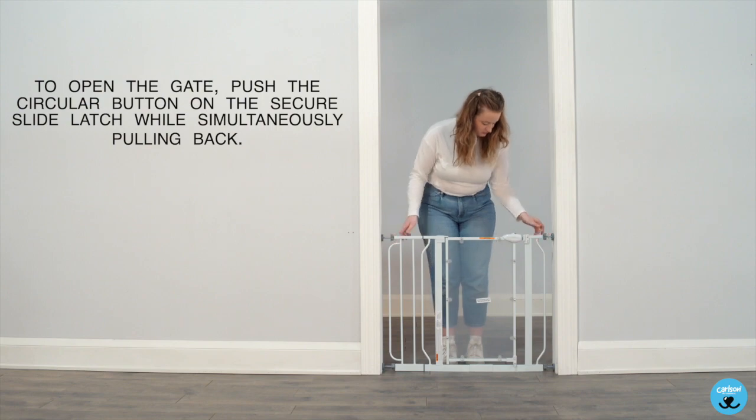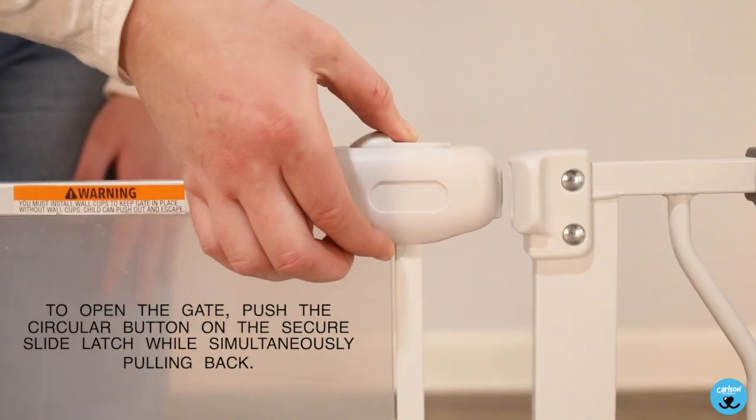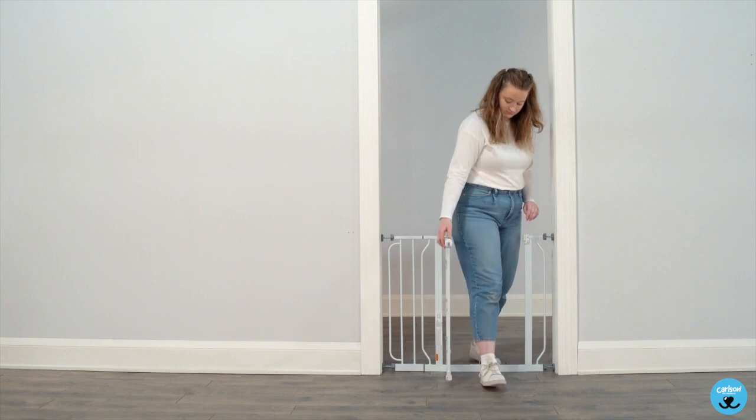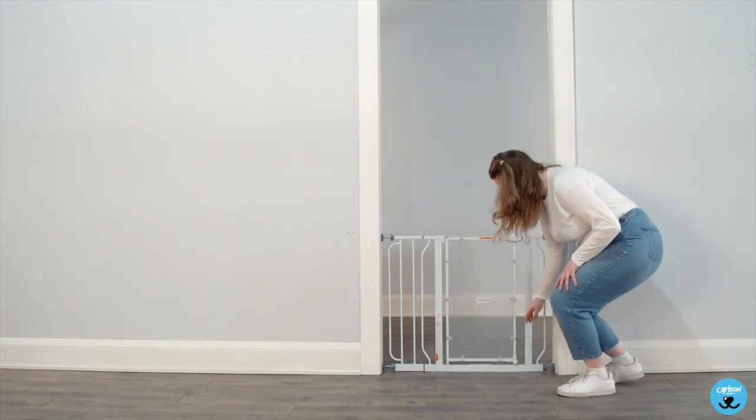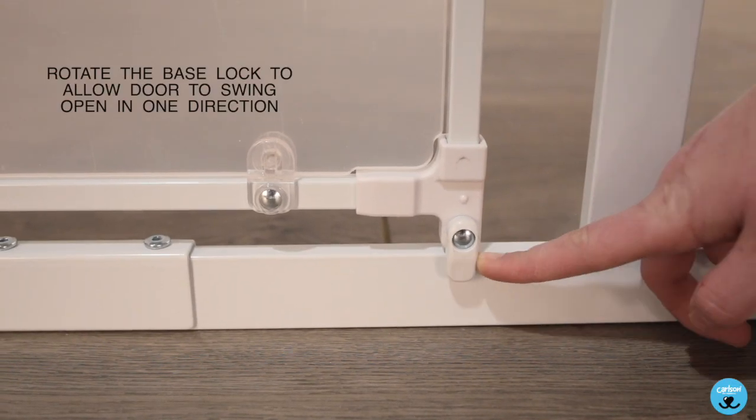To open the gate, push the circular button on the secure slide latch while simultaneously pulling back. Rotate the base lock to allow door to swing open in one direction.